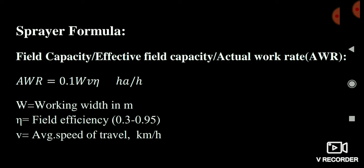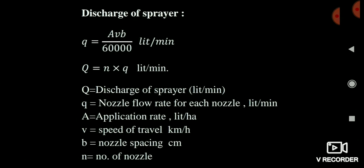If you are comfortable remembering formulas, you can memorize them. Otherwise, if you have basic common sense and knowledge of unit dimensions, you can easily derive such formulas. Unit dimensions are very important. The nozzle flow rate for each nozzle (small q) is in liters per minute, where small q equals A×V×B divided by 60,000. Here, A is the application rate in liters per hectare, V is the velocity, and B is the nozzle spacing.